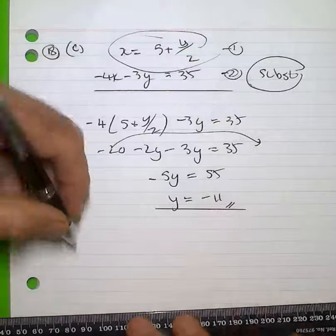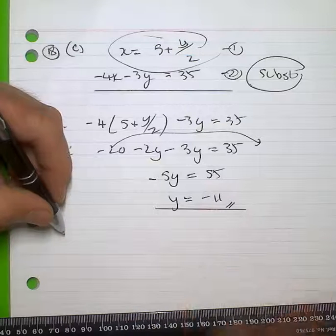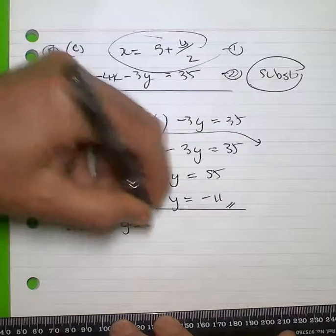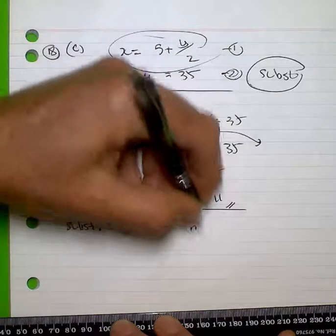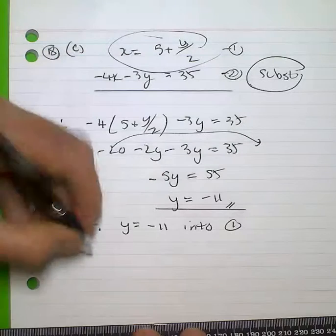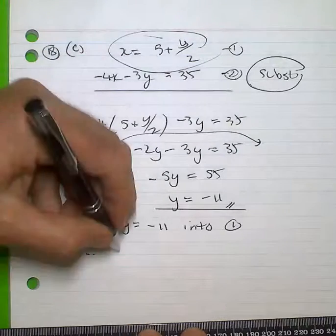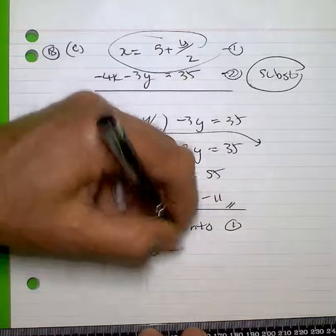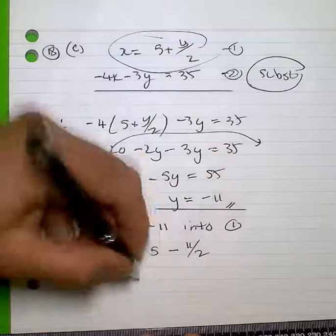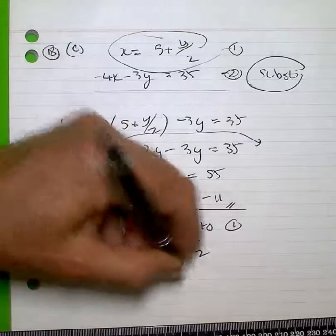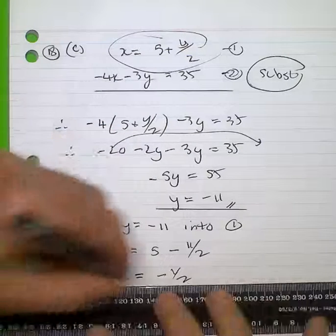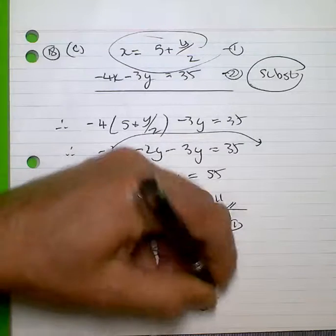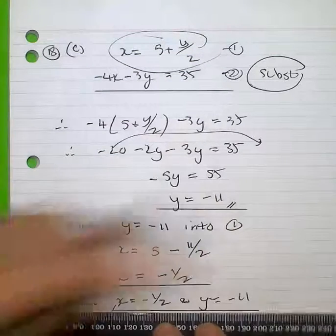In order to find out what x is going to be, I substitute y = -11 into equation 1. When I do that, x = 5 + (-11)/2, and that's -1/2. My answer: y = -11.